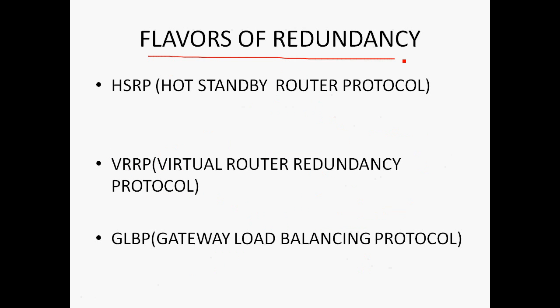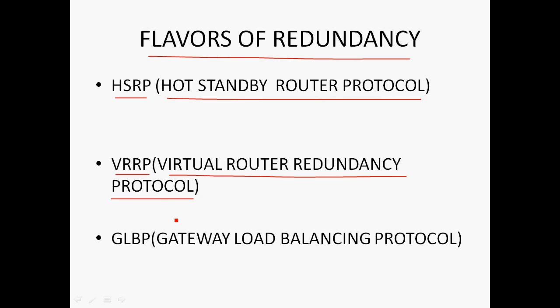There are three different flavors of First Hop Redundancy Protocol. The first one is HSRP — Hot Standby Router Protocol. The second is VRRP — Virtual Router Redundancy Protocol. And the third is GLBP — Gateway Load Balancing Protocol. So under First Hop Redundancy Protocol there are three types: HSRP, VRRP, and GLBP.